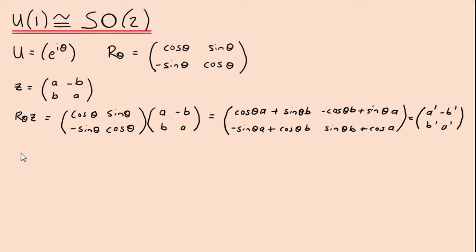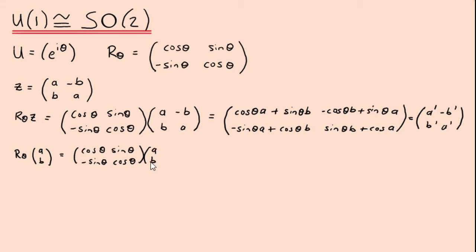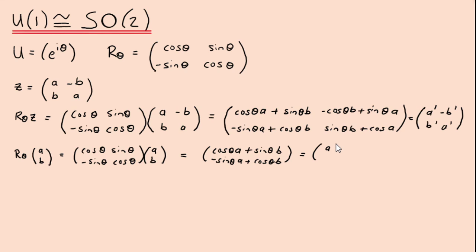Now, if you compare that with applying R_theta to a regular vector [a; b] in the two-dimensional plane — so you do [cos θ, -sin θ; sin θ, cos θ] times [a; b] — what you get is [cos θ · a + sin θ · b; -sin θ · a + cos θ · b], and that equals some new vector [a'; b'].